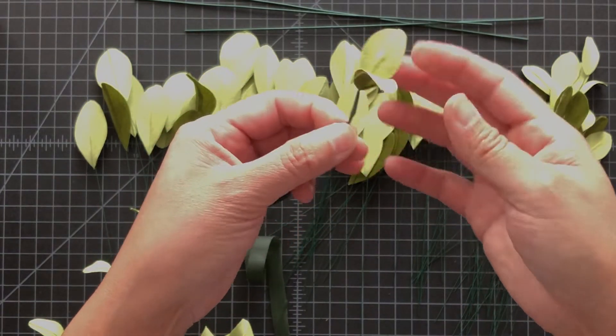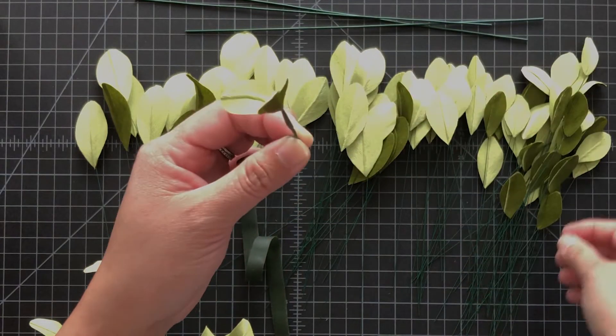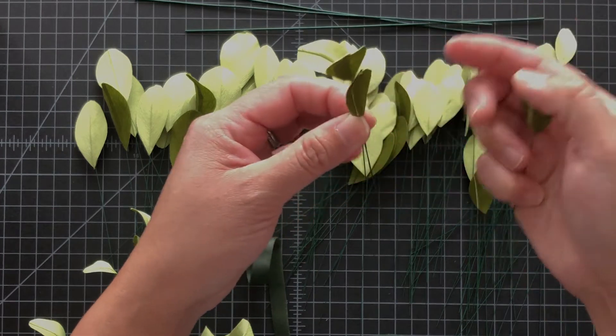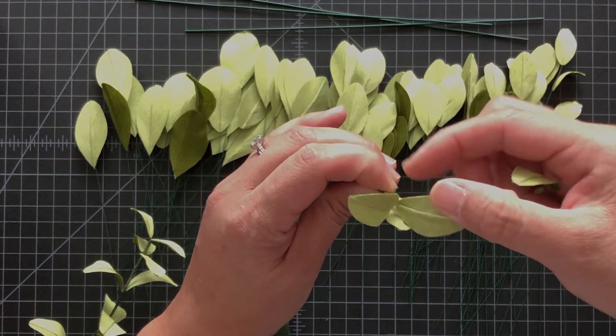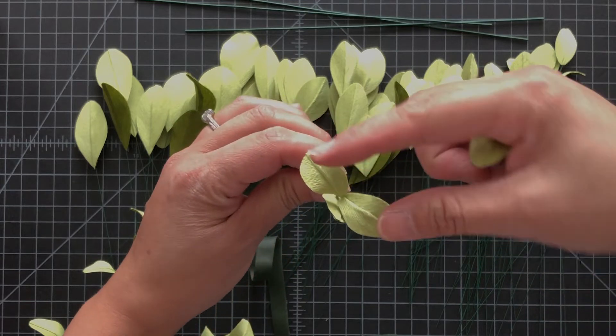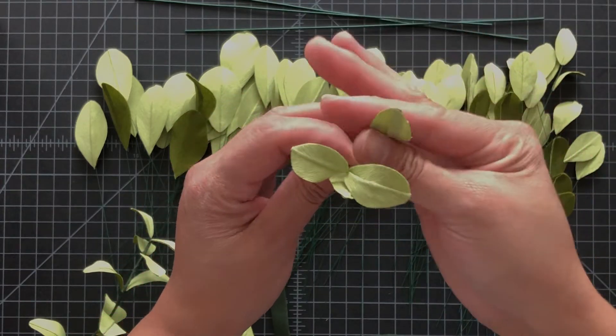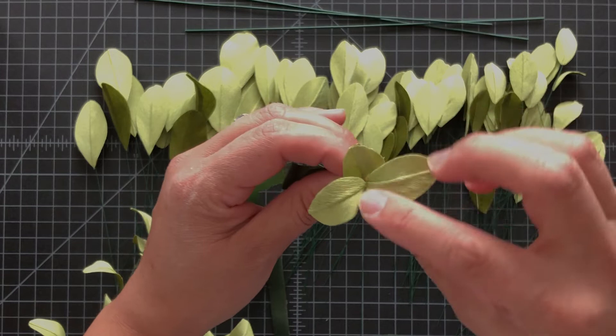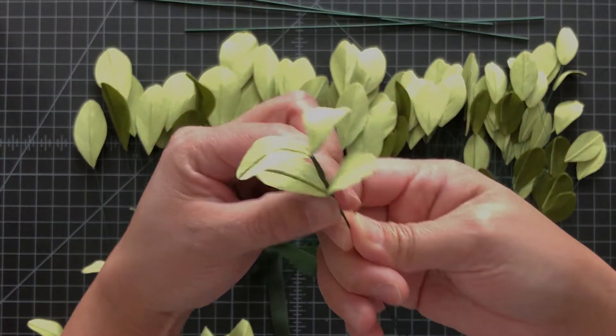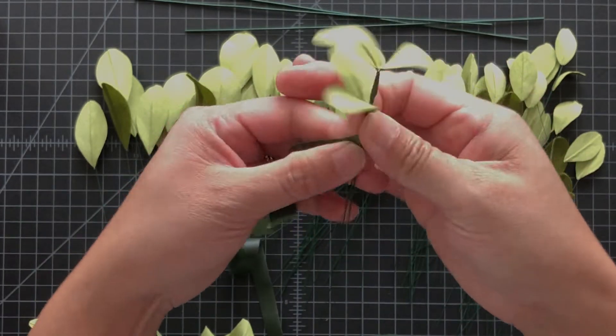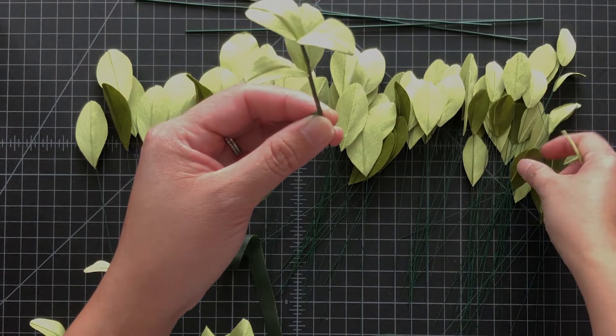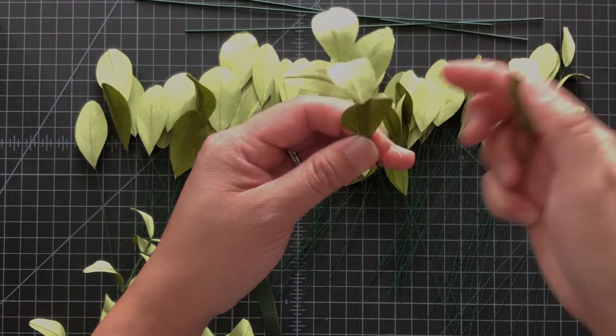Once you get about maybe an inch, I'll grab another one just slightly larger. This particular pattern is you're doing two on the side and then you're going to put two on the opposite side. It'll just give you this natural kind of fun botanical look.